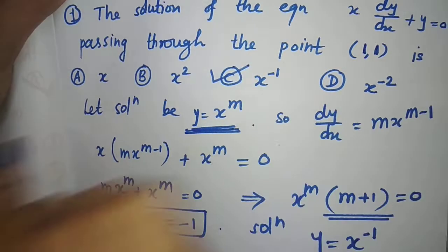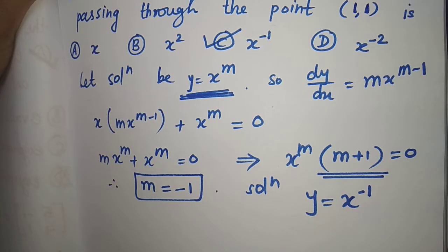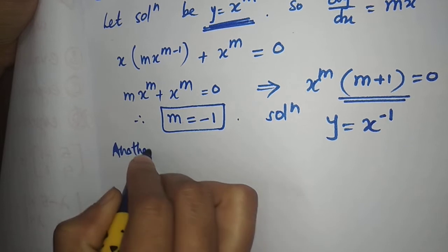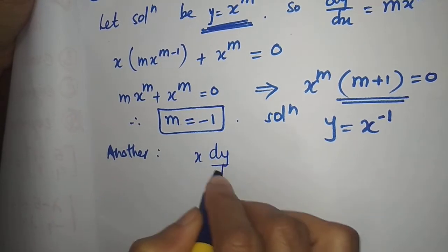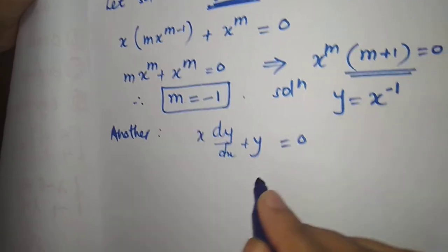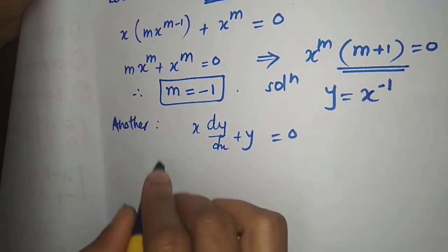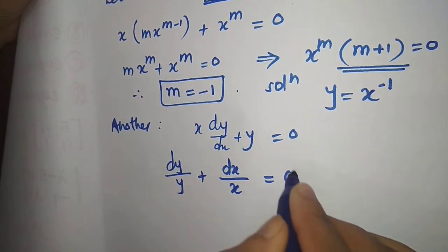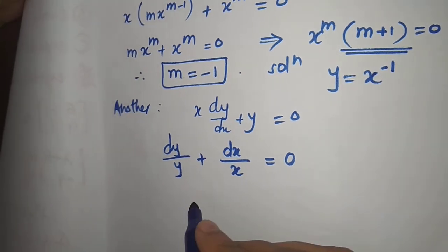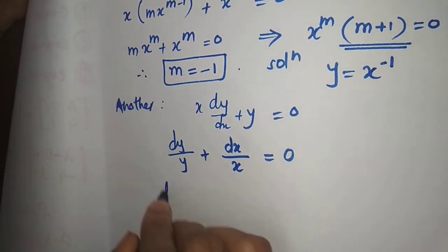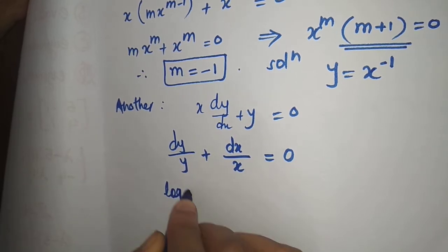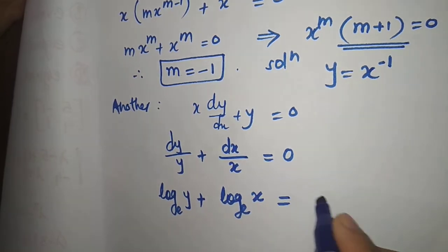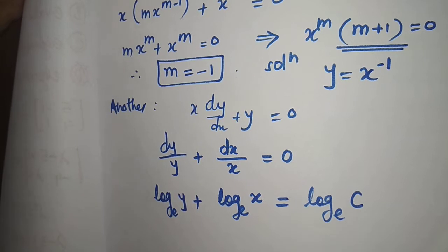The correct answer is option C. You can also use the standard method. The equation is x into dy by dx plus y equal to 0 — just separate the variables. We will get dy by y plus dx upon x is equal to 0.